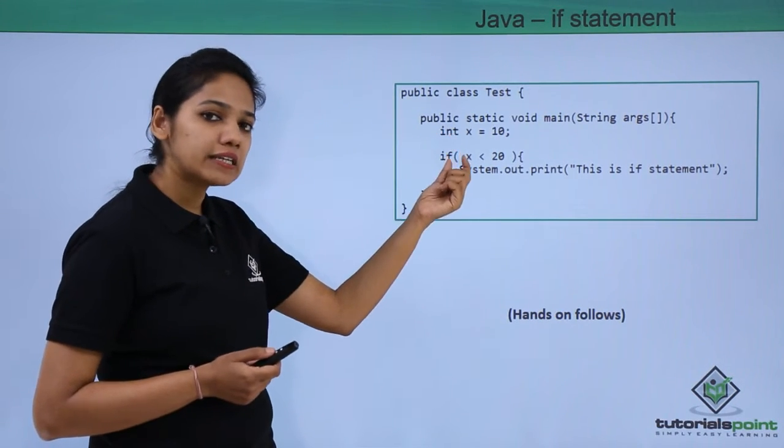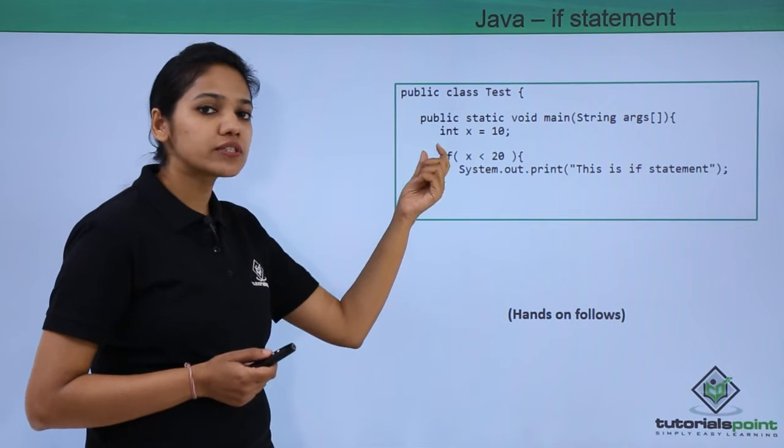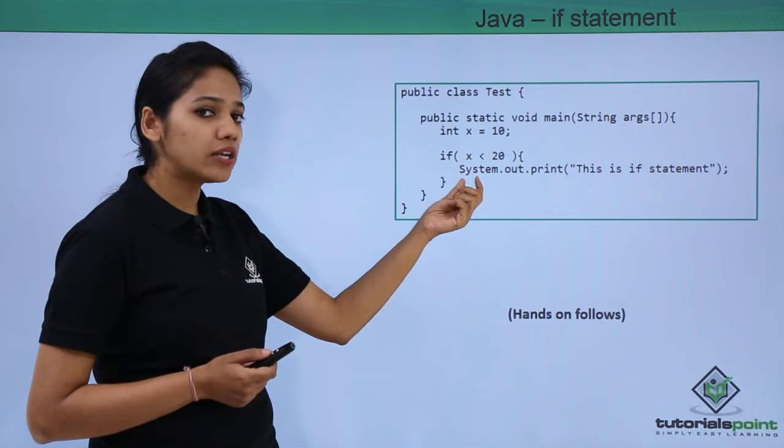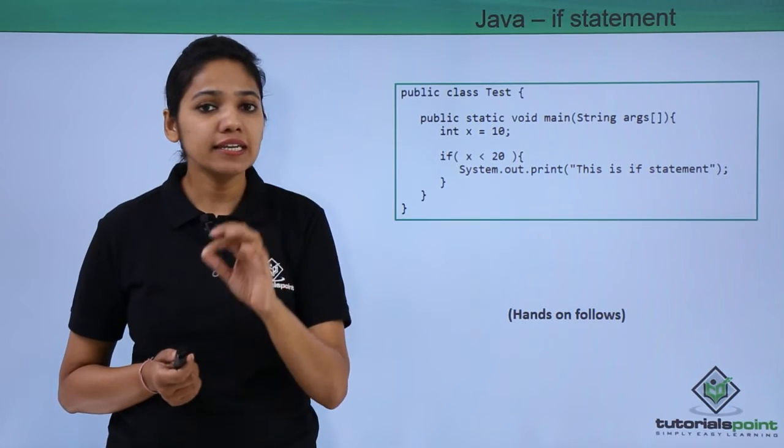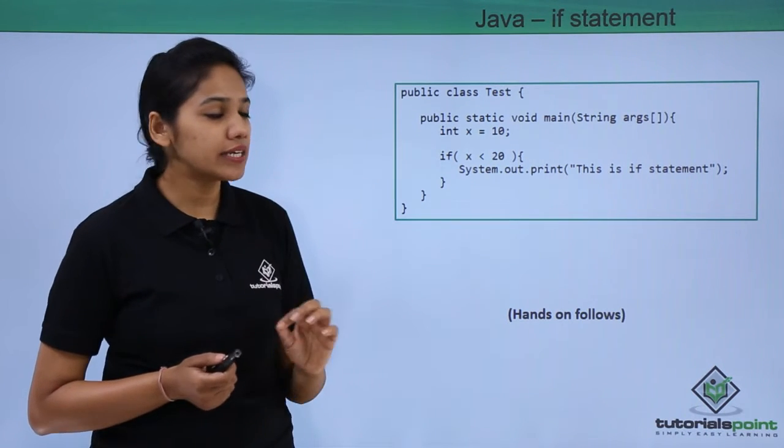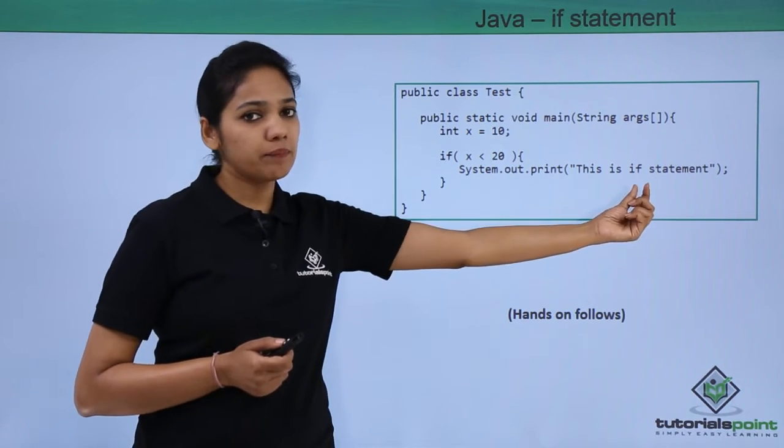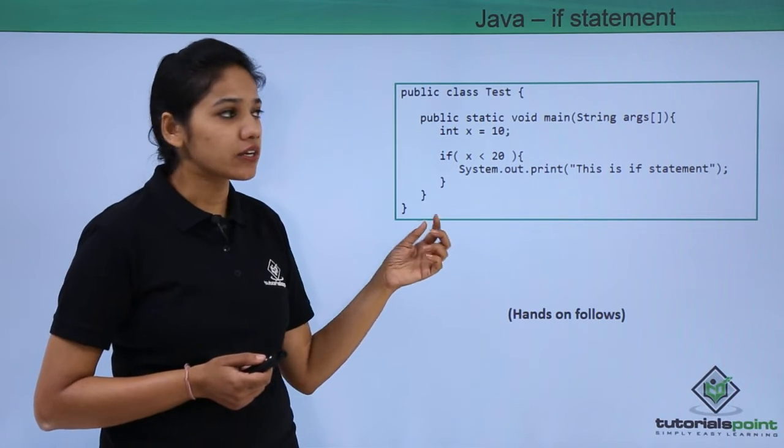So in this we have created integer x which holds a value 10, and then in the if condition you say if x value is less than 20. If x value which is 10 is less than 20 or not. Yes, x is less than 20, therefore it will go and print the statement or the block of statements that you write under the if condition.